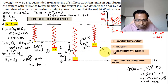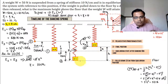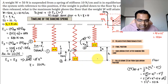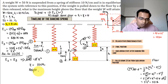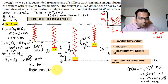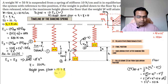The height of the block above the floor is 10 + x = 10 + 10 = 20 centimeters. That's the maximum height the weight attains above the floor after being released.